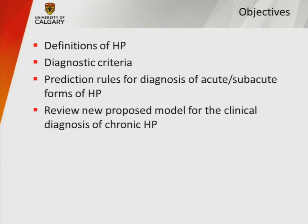My objectives for this part of the talk are to go through some of the definitions of HP, look at some of the proposed diagnostic criteria, review one of the prediction rules for the diagnosis of acute and subacute forms of HP, and then go through a new proposed model for the clinical diagnosis of chronic HP in the absence of surgical lung biopsy.